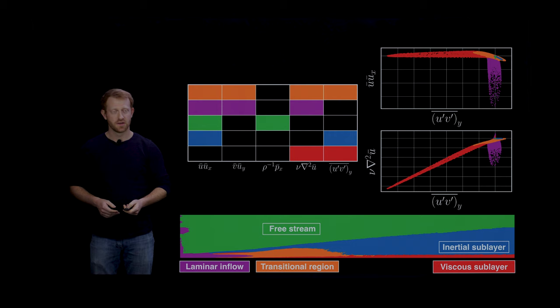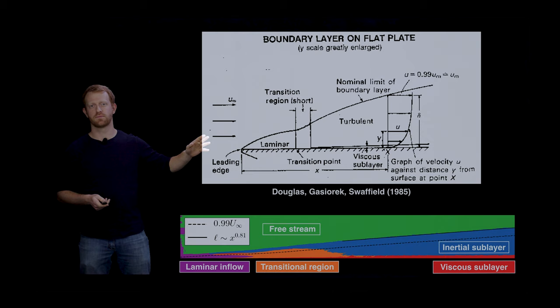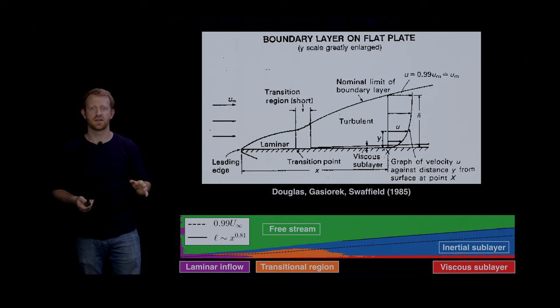We can see the laminar inflow, the inertial and viscous sublayers, and so on. This is a standard sketch of the breakdown of a turbulent transitional boundary layer, but now we can actually start from data and see where exactly each of these things are valid.